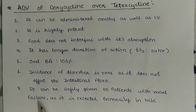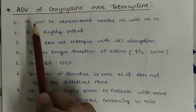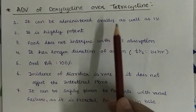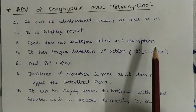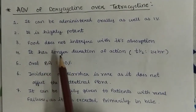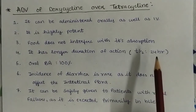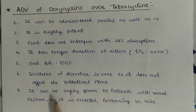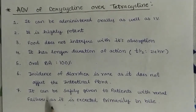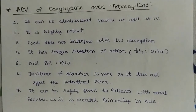Now, advantages of doxycycline over tetracycline. First, doxycycline can be administered orally as well as IV. It is highly potent. Food does not interfere with its absorption; hence oral bioavailability is approximately 100%. It has a longer duration of action — T-half is 24 hours. Incidence of diarrhea is rare as it does not affect the intestinal flora. It can be safely given to patients with renal failure as it is excreted primarily in the bile. That is enough for today. We have completed tetracyclines and will move to chloramphenicol in the next video. Thanks for watching — if you found it helpful, please like, share, and subscribe.